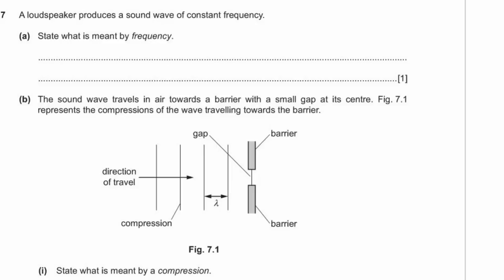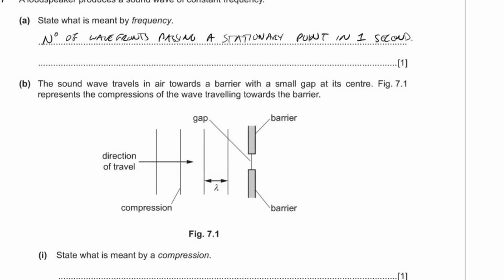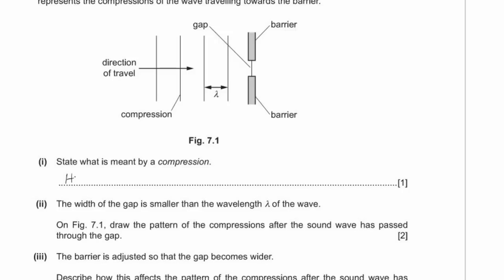Question seven: a loudspeaker produces a sound of constant frequency. Frequency is the number of complete oscillations per second. Compression is a region of high pressure in a sound wave — you can't just write 'high pressure', you must say it is a region of high pressure. The width of the gap is smaller than the wavelength λ of the wave.